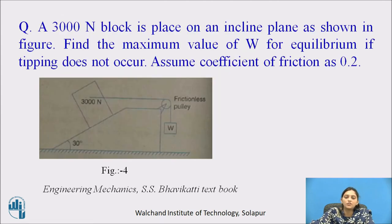Now we will solve one numerical on inclined plane. A 3000 Newton block is placed on an inclined plane as shown in the figure. Find the maximum value of W for equilibrium if tipping does not occur. Assume coefficient of friction as 0.2. The figure shows the inclination of the plane is 30 degrees. The weight of the block is 3000 Newton, and it is connected by rope to a load W.